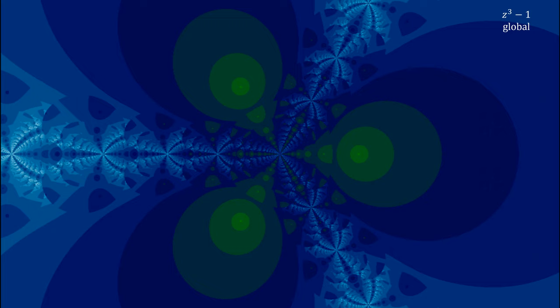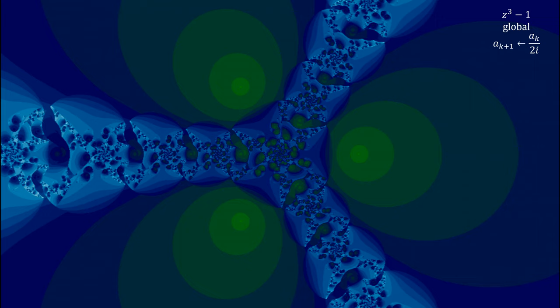What if after this, we now made a modification to our fractal behavior by instead of dividing by 2, divided by 2i? The result looks like something out of an M.C. Escher painting.